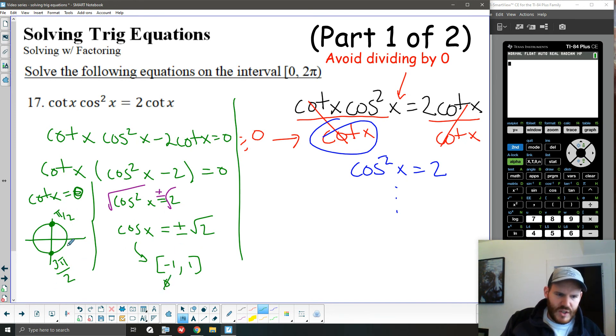So I wind up with just these two answers, the ones I have gotten from the cotangent being 0. So my solution set for this problem is pi over 2 and 3 pi over 2.